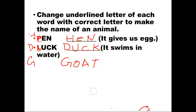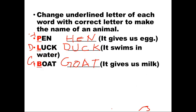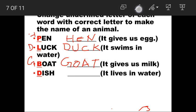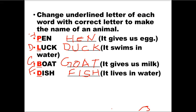Next word is 'dish' — D is underlined. Clue: it lives in water. Yes, change D to F, giving F-I-S-H — Fish. Very good.